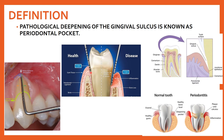This is a normal gingival crevice. When you insert the probe into it, a measurement of 2 to 3 mm is healthy tissue. But when you insert the probe and the measurement comes more than 3 mm, this is a periodontal pocket. Comparatively, this is a healthy tissue and this is a diseased tissue — the gingival sulcus has deepened and that is the periodontal pocket.